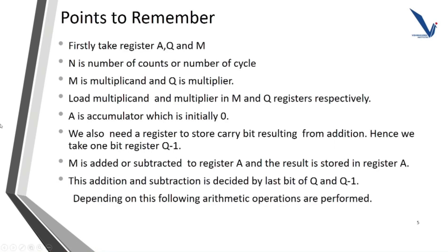Here are some points to remember. Firstly, take registers A, Q, and M. N is the number of counts or number of cycles. M is the Multiplicand and Q is the Multiplier. Load the Multiplicand and Multiplier into M and Q registers respectively. A is the Accumulator, which is initially 0. We also need a register to store the carry bit resulting from addition — hence, we take a 1-bit register called Q-1.